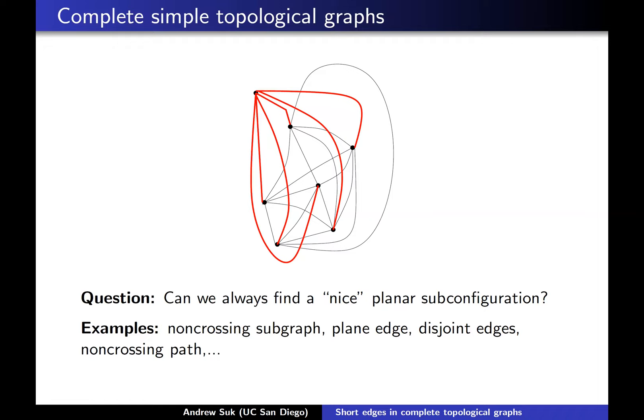A lot of attention the past couple of years has been focused on finding many pairwise disjoint edges — I'll say something about that at the very end of my talk — and I'll say something about the more general problem about finding non-crossing paths. But what I wanted to talk about today was more of this middle problem about plane edges and its generalization.